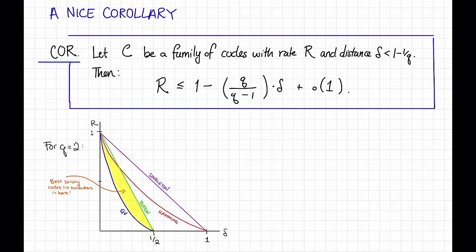We're going to omit the proof of the Plotkin bound in these videos, but you can check out the lecture notes for pointers to a proof. However, we will state and prove the following useful corollary, which extends the Plotkin bound to delta that is less than 1 minus 1 over q.